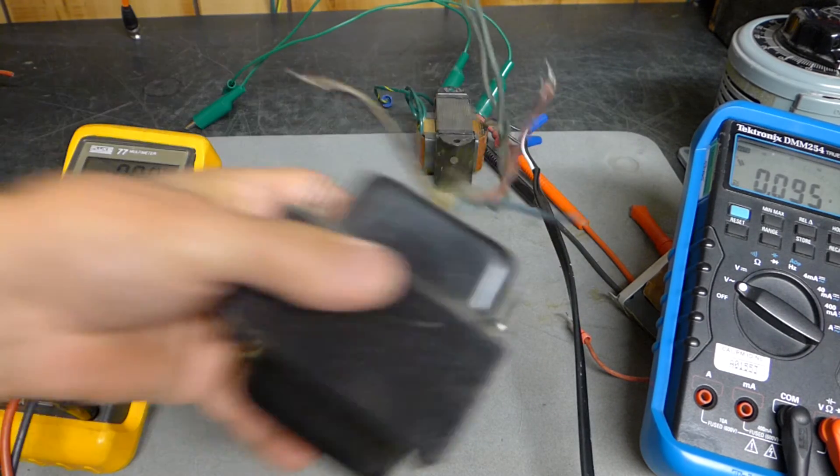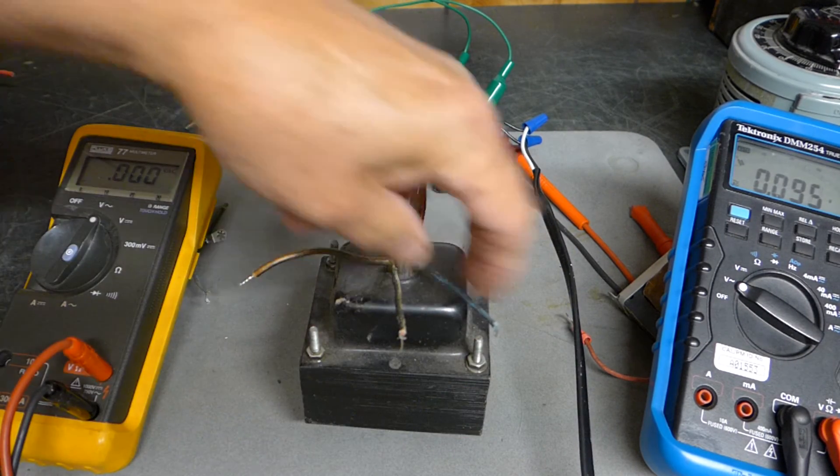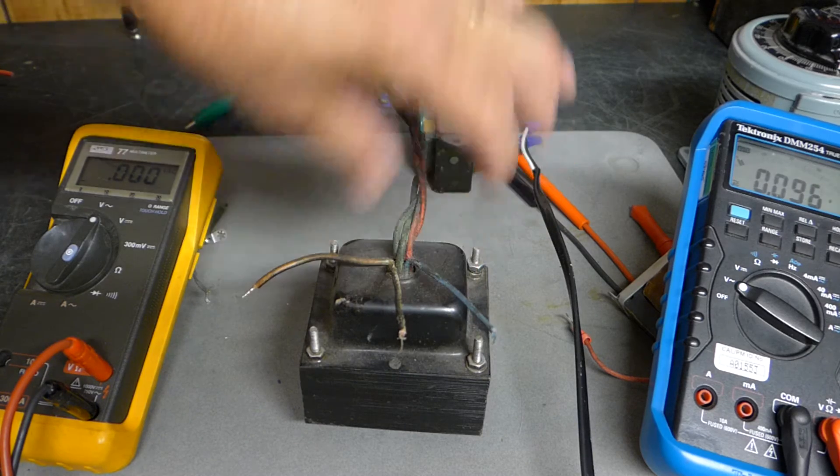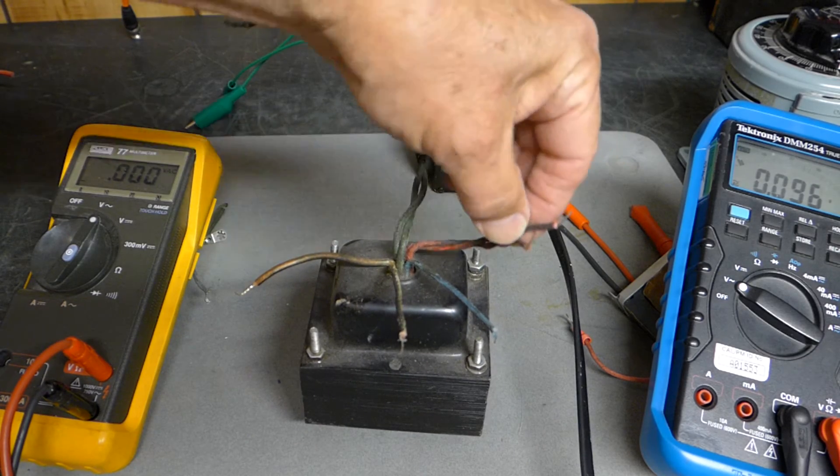Actually, when you put 120 volts across here, or across here rather, you're going to get out more than 300 - you're going to get out 300 and something.